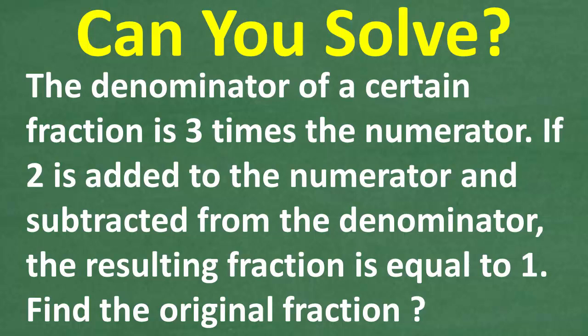Hopefully you understand the problem. We'll look at it again as we get into the solution. But remember, what we're trying to do here is find the original fraction. We have this original fraction, and it's manipulated by the numerator and denominator. After manipulating that fraction, the result is a fraction that's equal to one.